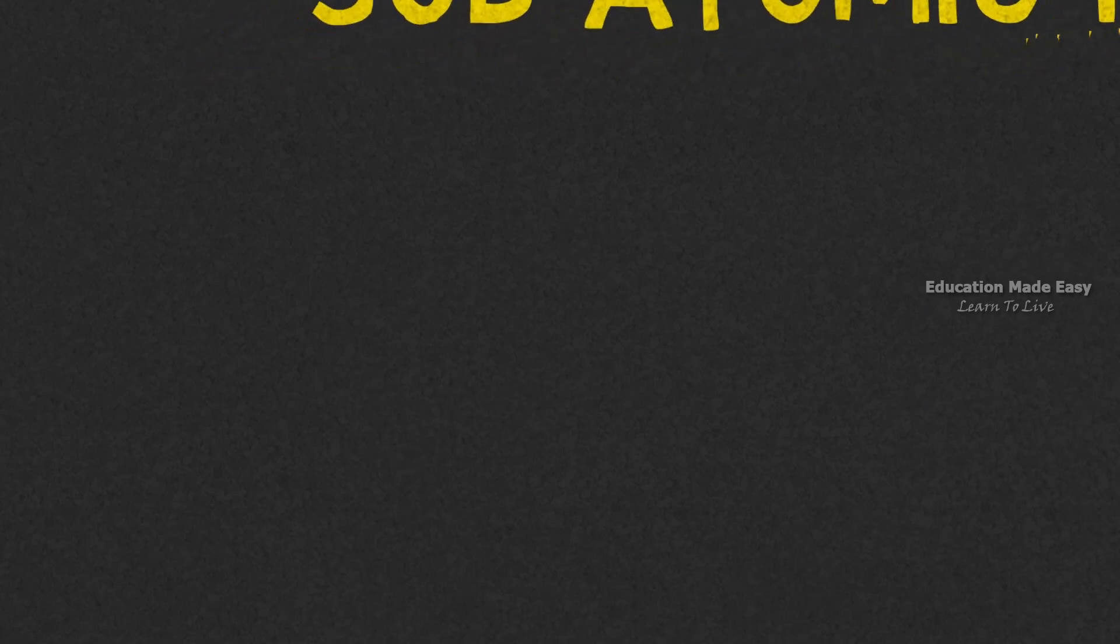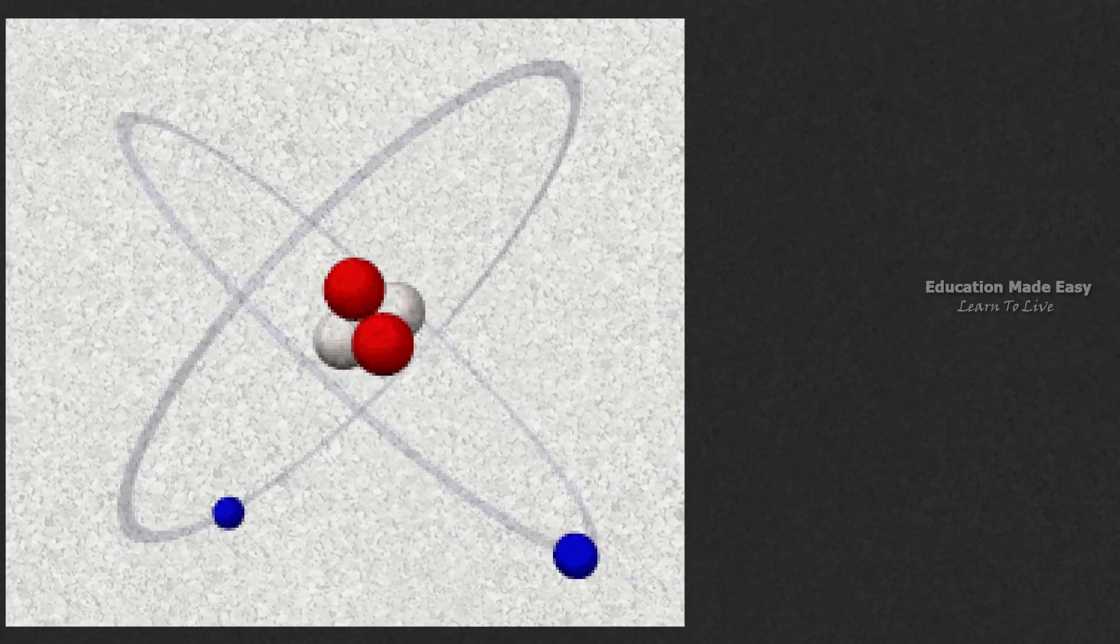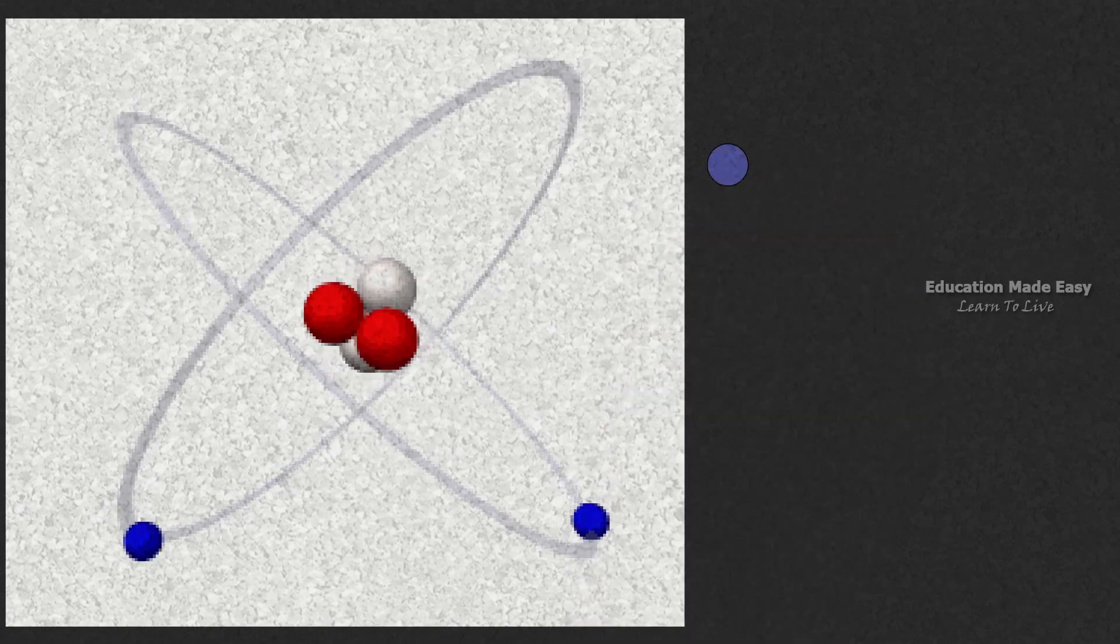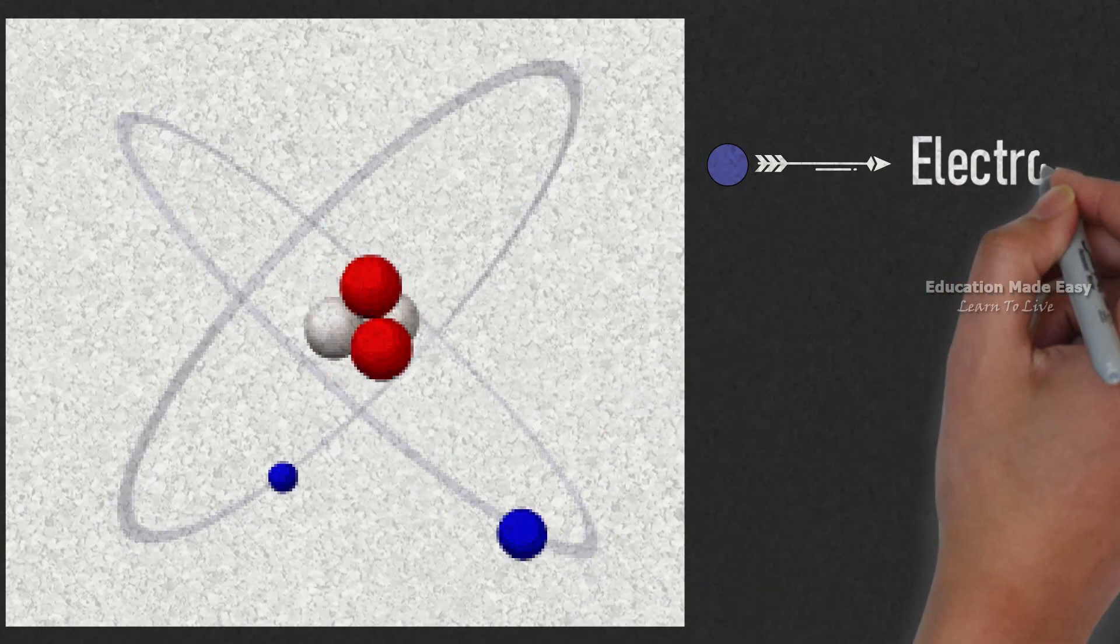Let us first start with subatomic particles. Subatomic particles are the particles by which an atom is made. The blue dots represent negative charges, known as electrons.